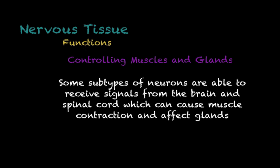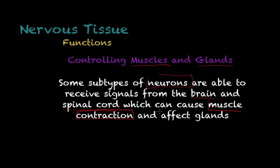Another function of nervous tissue is that it is able to control muscles and some glands as well. Some subtypes of neurons are able to receive signals from your brain and spinal cord and work as a network that communicates between these structures and your muscles. This will then cause muscle contraction — the actual movement of the muscle — and also affect the function of some glands.